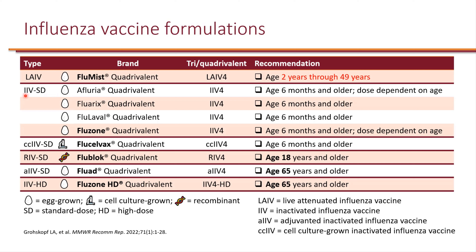Next, we have inactivated influenza vaccines. Traditionally, we have the standard dose — 15 microgram shots — with several formulations from different manufacturers available. These are all IM injections, while the live attenuated flu mist is a nasal spray, which is helpful for people afraid of needles. All inactivated influenza vaccines are quadrivalent — the number four in the name indicates this. We only have quadrivalent available on the market nowadays.